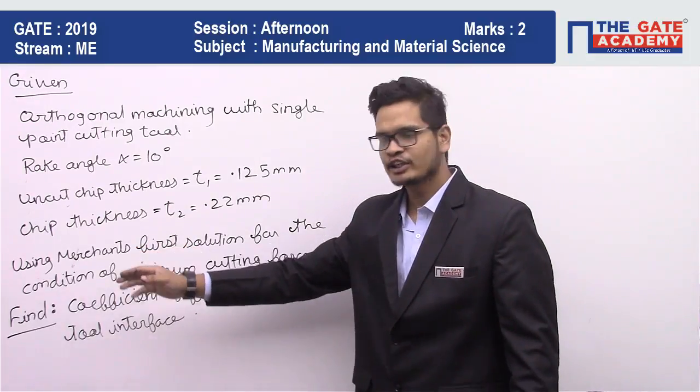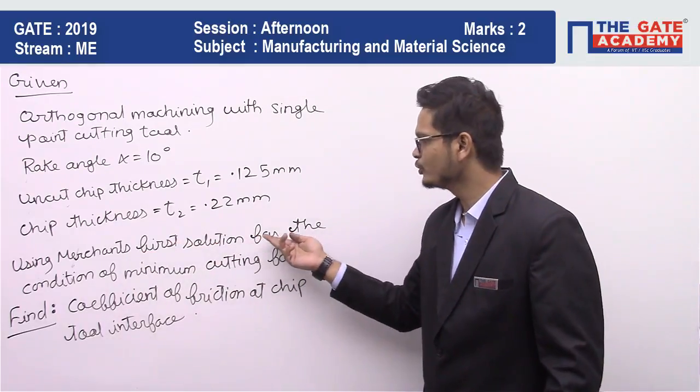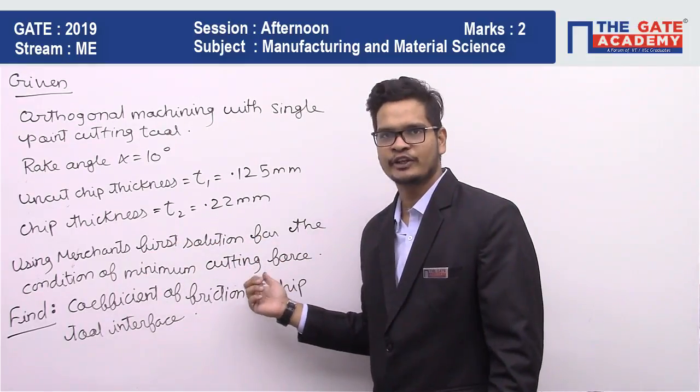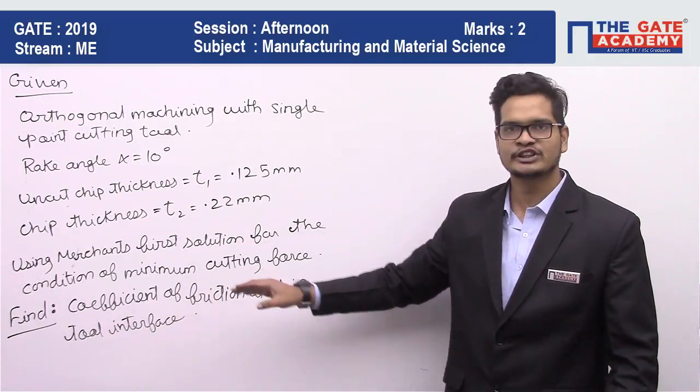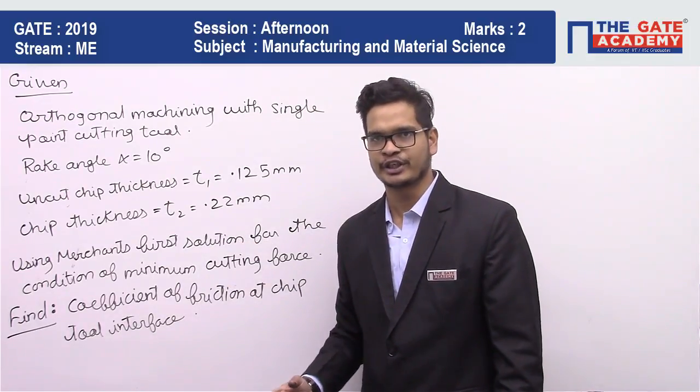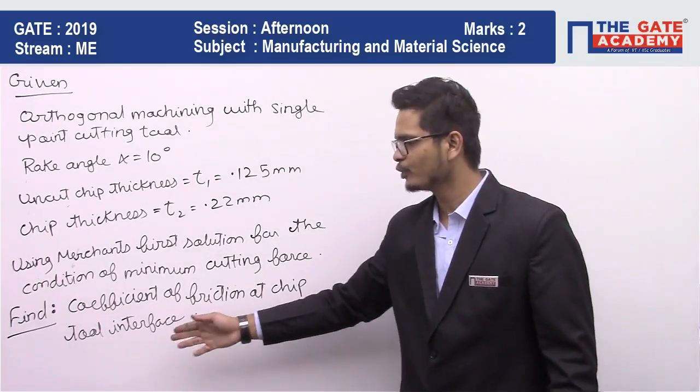Now they are asking us to use Merchant's first criteria or Merchant's first solution for the condition of minimum cutting force. Here they are trying to play with the English. This is nothing but Merchant's criteria for minimum power consumption, and they are asking us to find the coefficient of friction at chip tool interface.